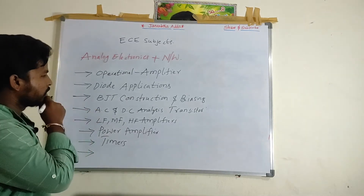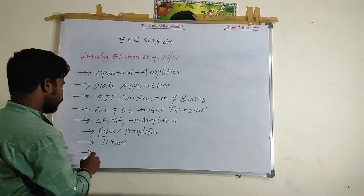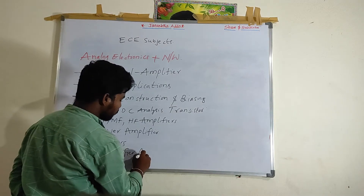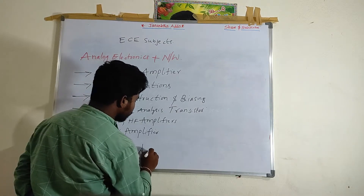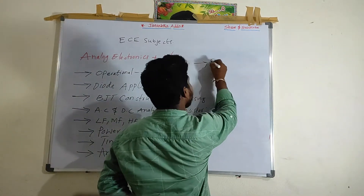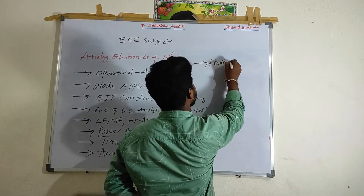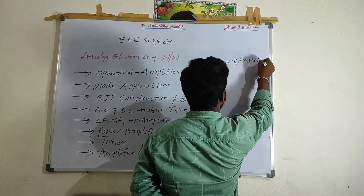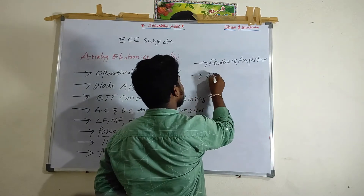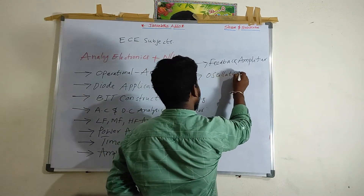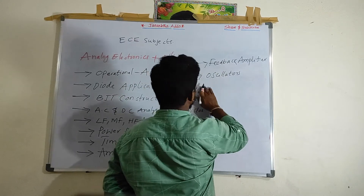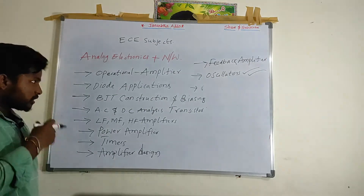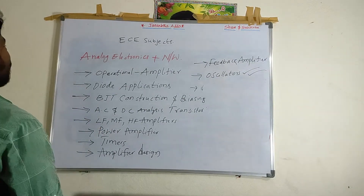We will also discuss transistor amplifier design and feedback amplifiers — which I think were also removed from GATE 2021. We will also discuss feedback amplifiers and oscillators. So this is an overview of Analog Electronics.